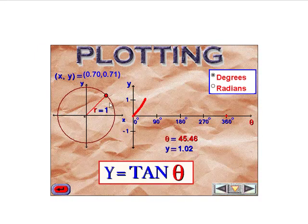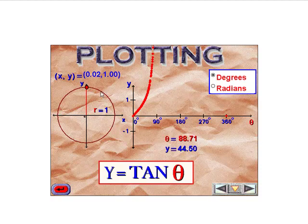At 90 degrees, that's where we run into trouble, that's where x equals 0. So 1 divided by 0 is undefined, and if you see on the plot, it goes up to positive infinity.